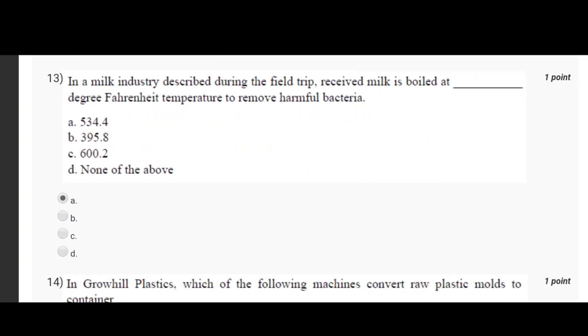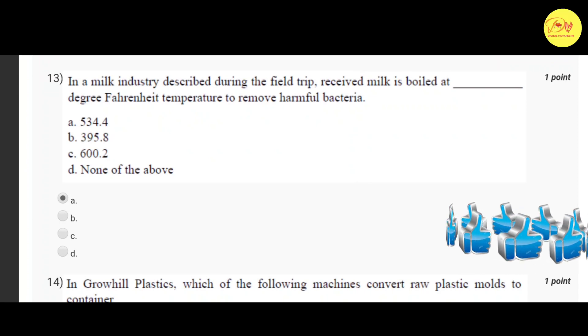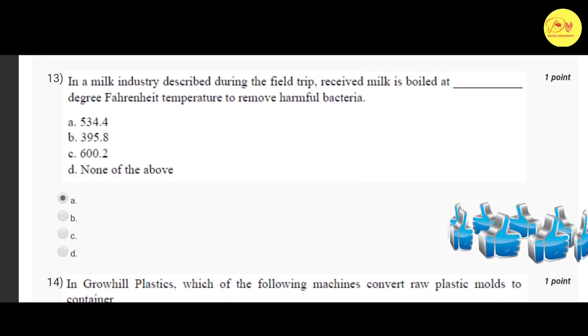Our thirteenth question is in a milk industry described during the field trip, received milk is boiled at dash degree Fahrenheit temperature to remove harmful bacterias. Correct option is A, 534.4.